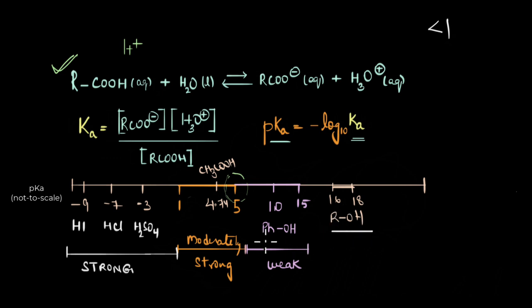You see, alcohols, phenols and carboxylic acids all exhibit their acidic properties due to the presence of OH bond in them. By breaking this OH bond, these compounds are able to release H+ ions that determine their acidic strength.